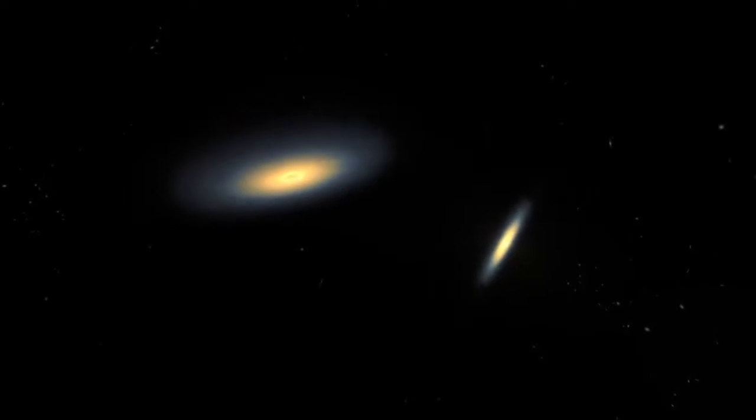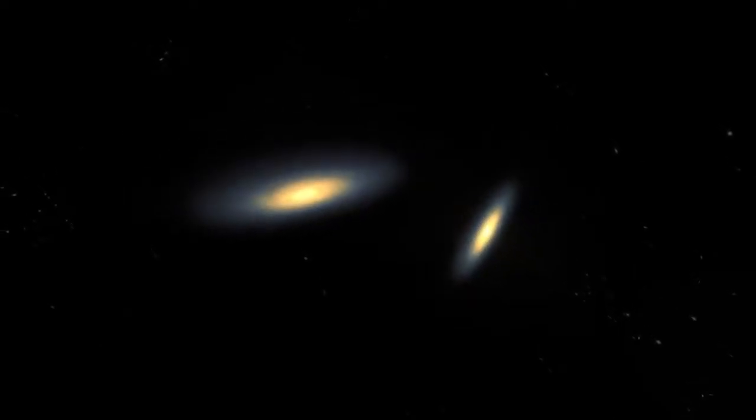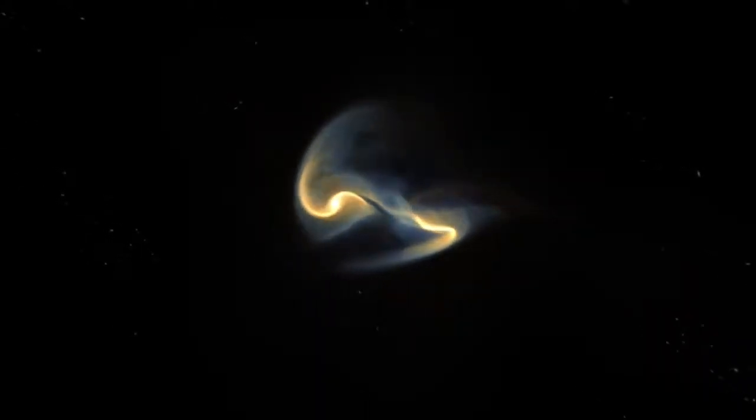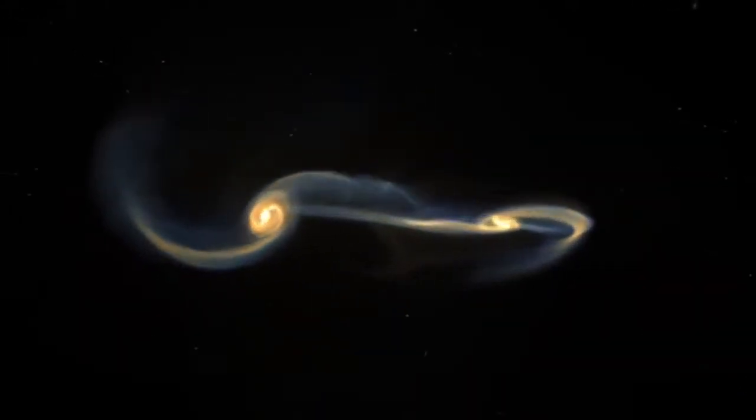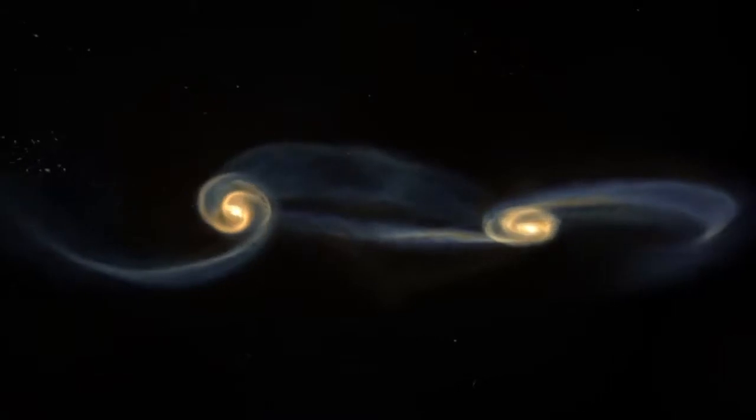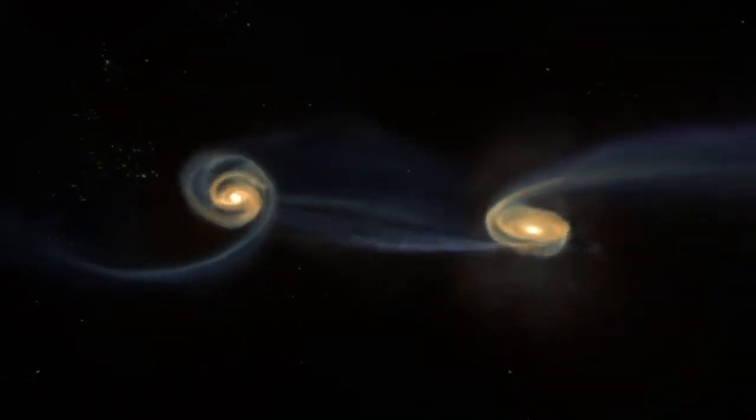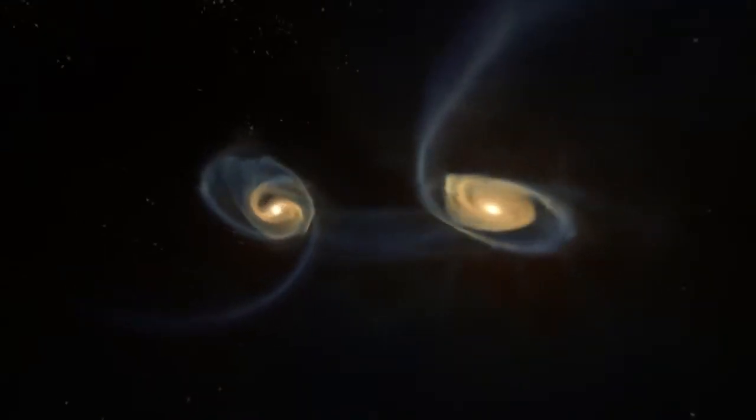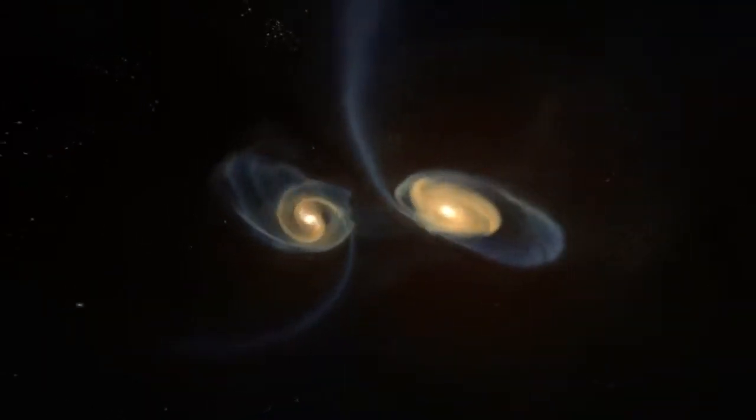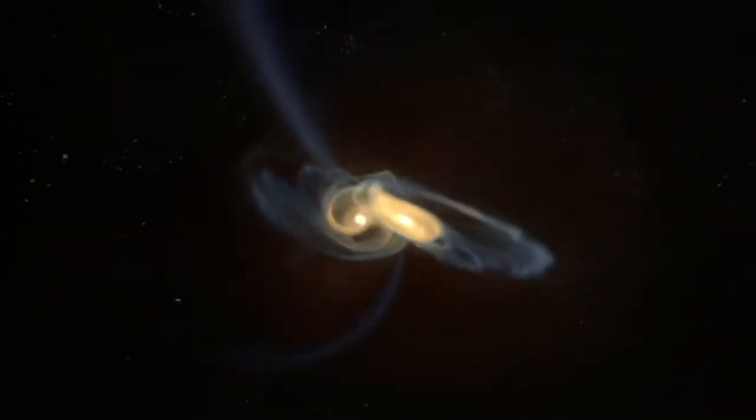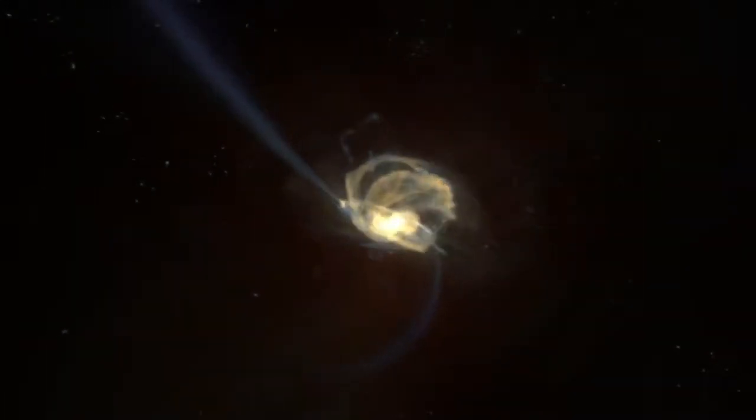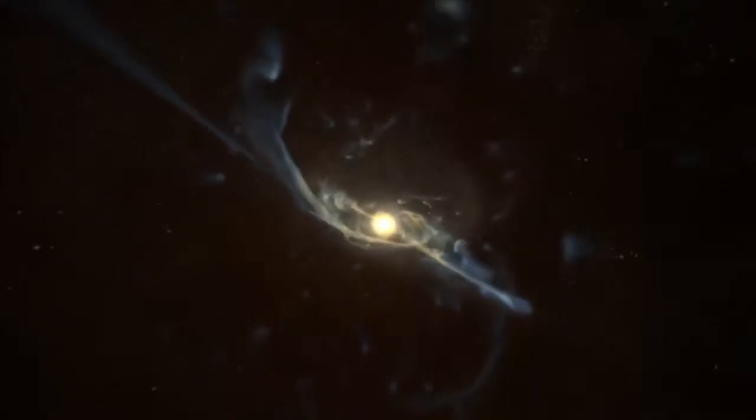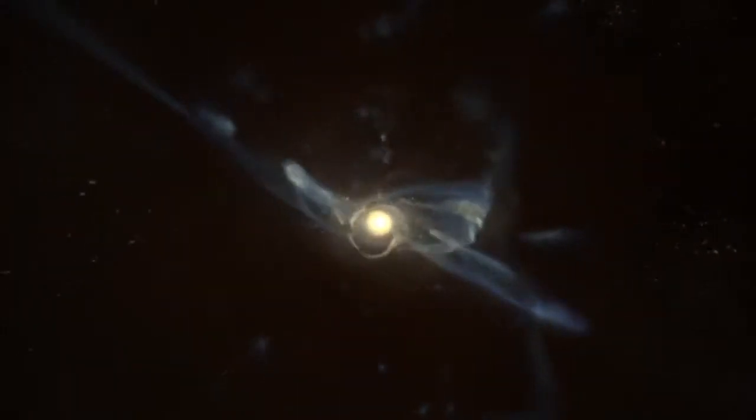Astronomers say the crash will begin about two billion years from now. This supercomputer simulation shows how the event may unfold over billions of years. The first pass distorts the two great spirals. Stars are tossed into the intergalactic night like sparks thrown from a campfire. Our Sun, complete with planets in tow, could be similarly ejected.